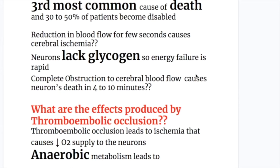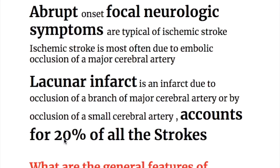Reduction in blood flow for a few seconds causes cerebral ischemia because neurons lack glycogen, so energy failure is rapid. Complete obstruction to cerebral blood flow causes neuronal death in 4 to 10 minutes. Abrupt-onset focal neurologic symptoms are typical of ischemic stroke, which is most often due to embolic occlusion of a major cerebral artery.